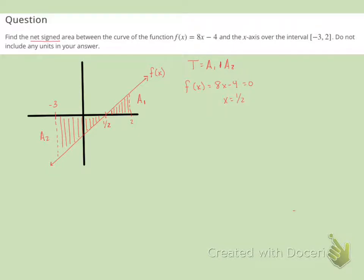So now area 1, again we're going to use 1/2 base times height. So we'll have 1/2. The base is going to be the distance between 2 and 1/2. So it will be 2 minus 1/2. And the height will be the function evaluated at 2. So f(2).